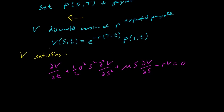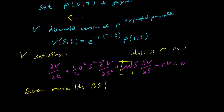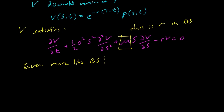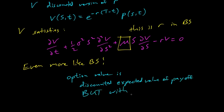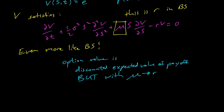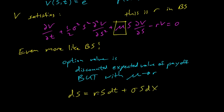This is looking even more like Black-Scholes. The key difference is that Black-Scholes has r where this equation has μ, the drift — that's the only difference. So we know that Black-Scholes gives the option value as the discounted expected value of the payoff, but with μ replaced by r. This means the random walk is actually dS = rS dt + σS dX — we call this the risk-neutral random walk.